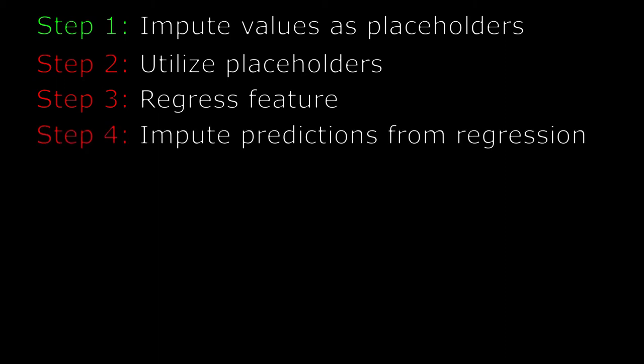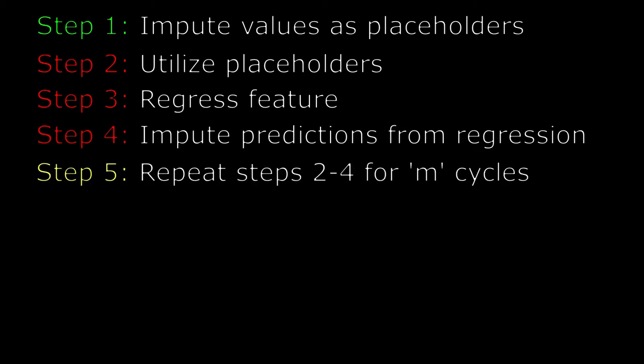Step four: the missing values of your original feature — your dependent feature — are replaced with the predictions of your regression model. Note that as you are imputing other features, you will use the changed observations of prior features as independent variables for your next imputation. Step five is to repeat steps two through four for each variable that needs imputation. One cycle is iterating through all the features once. Do this until you don't have any more features that need missing values filled.